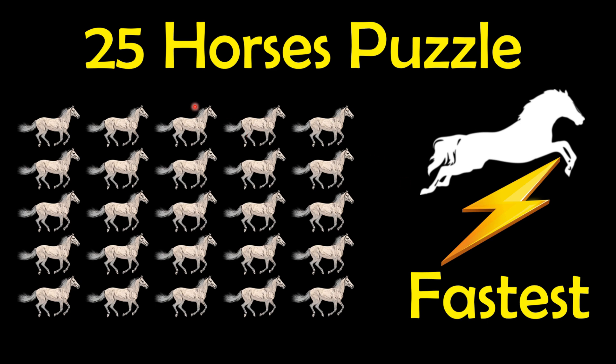In this video we will see the famous 25 horses puzzle. We have 25 horses and we have to find out the three fastest horses. The condition is that at a given time you can only race among five horses, and you cannot measure the exact speed of horses — you can only see the relative ordering in a race: first, second, third, fourth, and fifth.